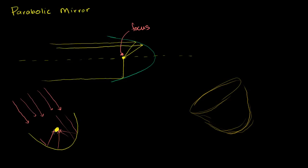You could imagine having a water pipe running into the screen here, and all of that light energy would be used to heat up that water pipe. So it's a pretty neat way to concentrate energy. Another thing you might want is maybe instead of taking in energy, you want to give out energy so that all the beams of light are parallel.